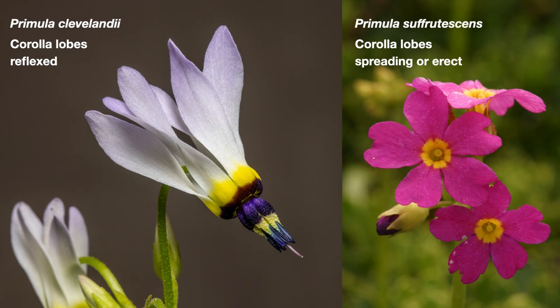When identifying shooting stars, the Primula key asks several questions. Some shooting stars are easy to identify, while others are more difficult, with similar characteristics and overlapping ranges. Are the corolla lobes spreading outward, or erect upward, with clearly free anthers? If so, that would be Primula suffrutescens, a montane species that is not a shooting star. Or are they reflexed — curved backwards — with anthers held into a cone shape? That makes it a true shooting star.